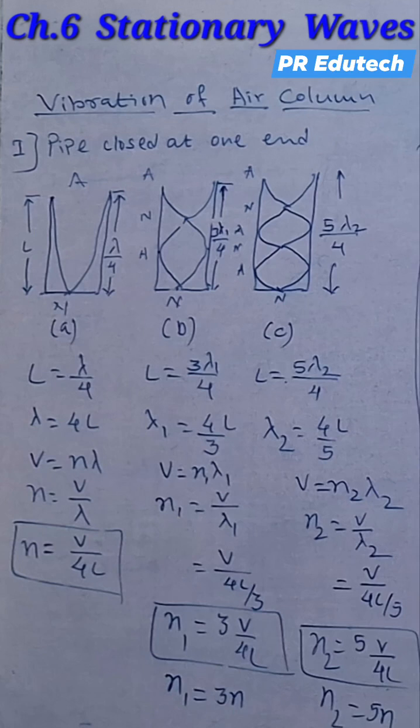That is n1 is equal to 3N. Similarly in the third case n2 is equal to 5N. Thus in a pipe closed at one end only odd frequencies are present.